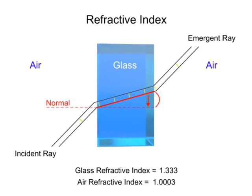Likewise, when the beam of light exits a highly refractive medium into a medium with a low index of refraction, the process is reversed. The bottom portion of the beam of light exits first and resumes at the speed of light, with the top portion still at the speed determined by the medium. This causes the beam to pivot away from the normal line.